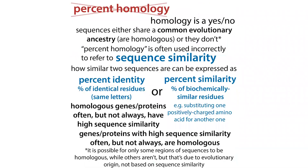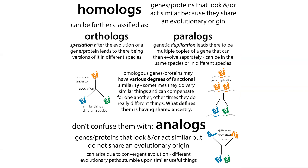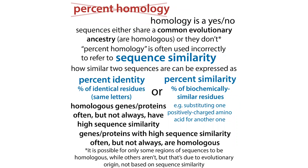Homologous genes or proteins are often going to have high sequence similarity, but not necessarily — because after their common ancestry they can evolve separately and actually become quite different. Conversely, genes or proteins with high sequence similarity often are, but not always, homologous. Sometimes software will try to predict genetic origins and evolutionary paths based on the degree of sequence similarity.